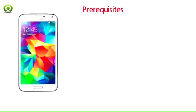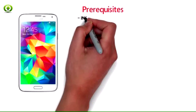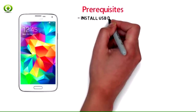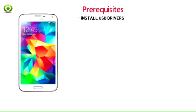Pre-requisites to update Galaxy S5 to Android 6 AICP ROM. 1. Download and install USB drivers for Samsung Galaxy S5 G900F.